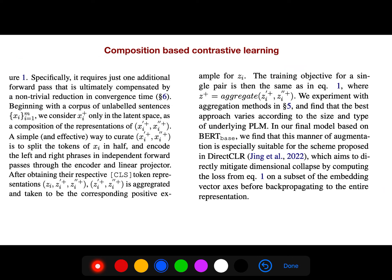Specifically, it requires just one additional forward pass that is ultimately compensated by a non-trivial reduction in convergence time. Beginning with the corpus of unlabeled sentences, we consider XI plus in the latent space as a composition of representations. A simple way to curate this is to split the tokens in half and encode the left and right phrases in independent forward passes of the encoder and linear projector.